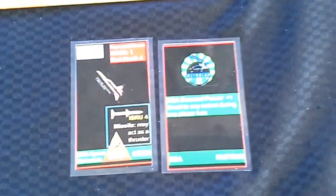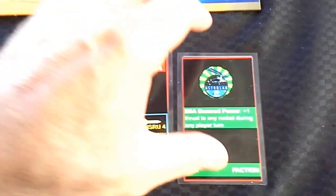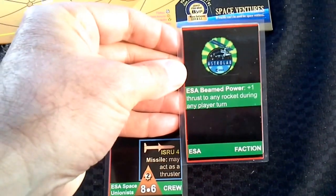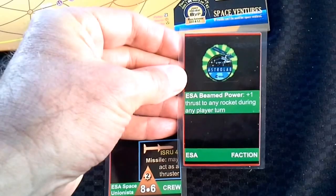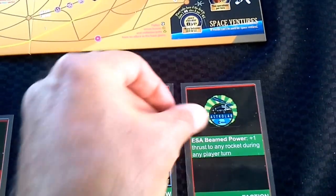And Patrick was playing the European Space Agency, whose ability gave them a beamed power plus one thrust to any rocket during any player turn.